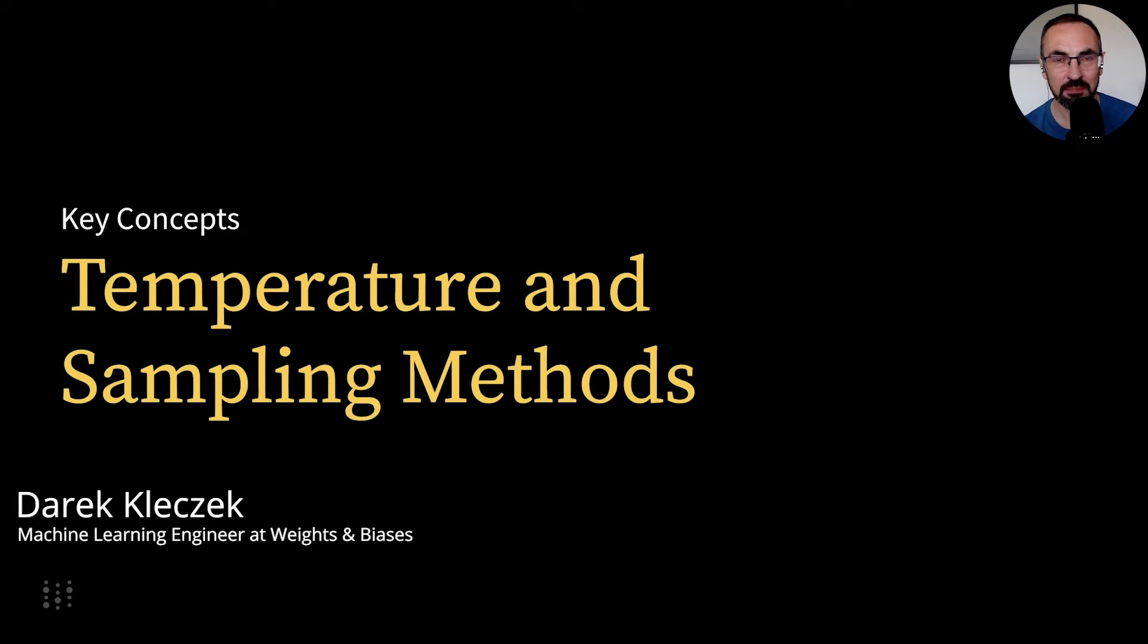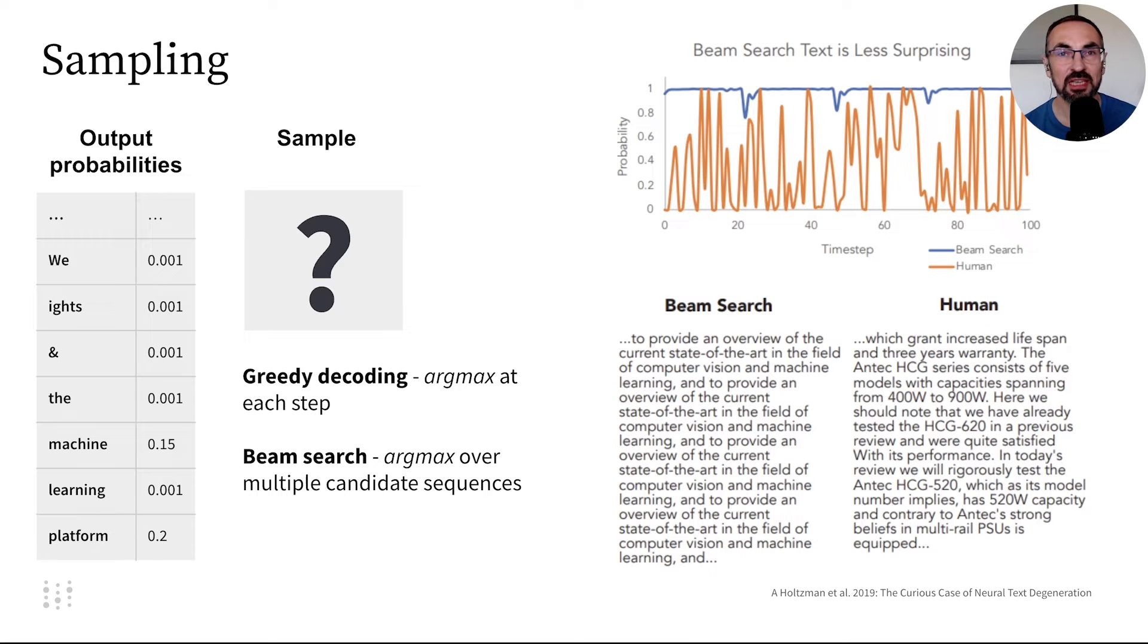Now, let's explore sampling methods for large language models. LLMs generate text through sampling. They produce a set of probabilities across the vocabulary and pick a token to follow the input sequence.